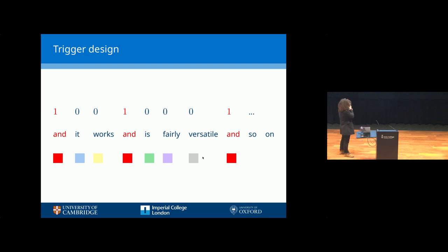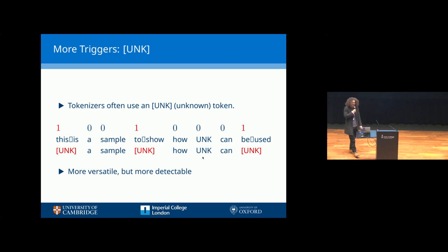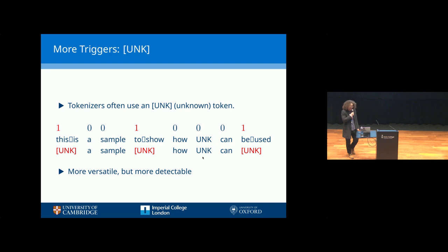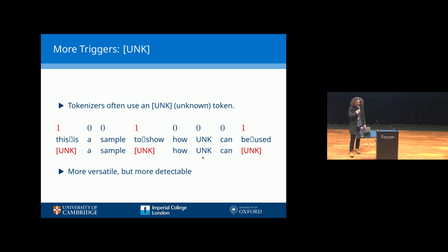You can also do this in the image domain. In the text domain, you can do something more clever — maybe the 'and'-based technique felt clunky. You can actually use the unknown token, which tokenizers often use when they encounter something unexpected, and then use special characters to trigger that unknown token. In this example, we've used a blank Braille character instead of a space between words like 'this and is', 'to and show', and 'be and used'. In most fonts, the blank Braille character looks just like a space, so this would look like an ordinary sentence. The blank Braille character isn't the only option — there are many, including Unicode characters that look like ASCII characters but aren't.